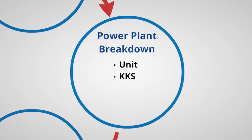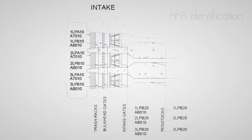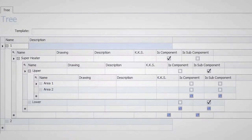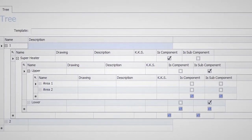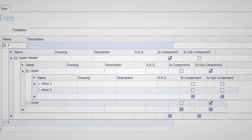This is done by using a simple hierarchical structure. The components are listed per unit and can be identified by various descriptive fields, including the KKS identifier. The hierarchy can be categorized into components and subcomponents.